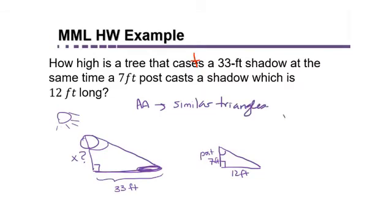So using the technique of comparing the two sides of the first triangle to the two sides of the second triangle we would have x over 33 is equal to 7 over 12.